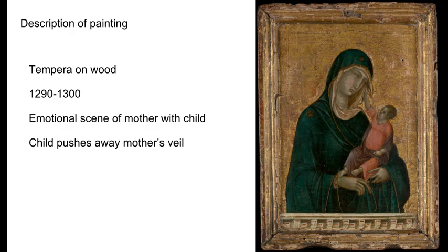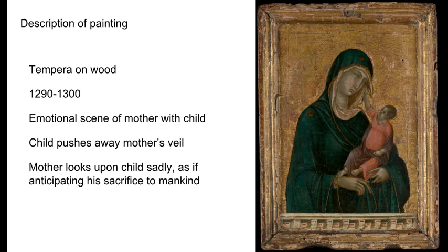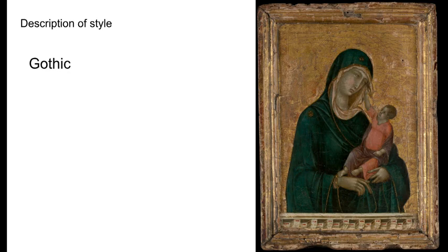The child pushes away at his mother's veil while she looks on him with profound sadness. The drapery of her clothing enhances the three-dimensionality of the figures. It is at once both naturalistic and abstracted, particularly the figure of the child who appears almost as a small adult. The attitude of the mother suggests a premonitory melancholy, as if she foresees the fate of her son.